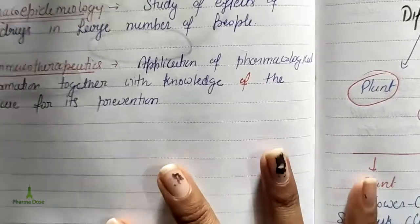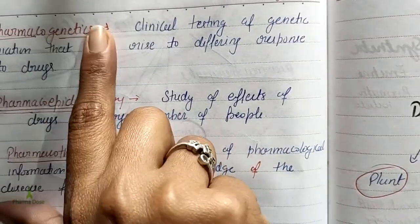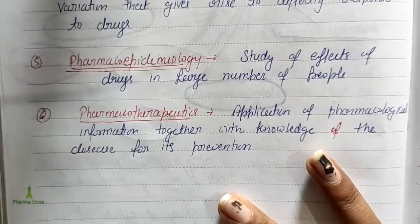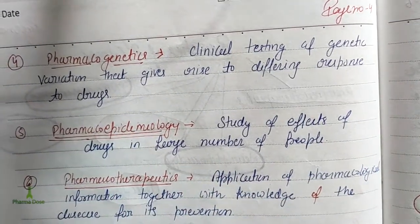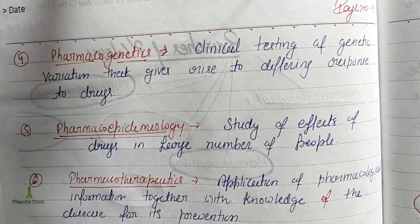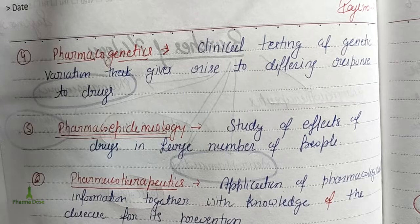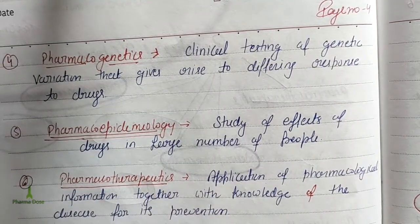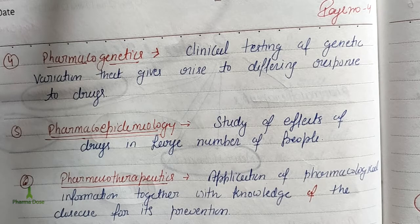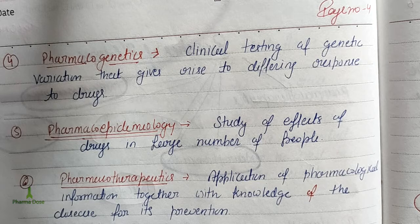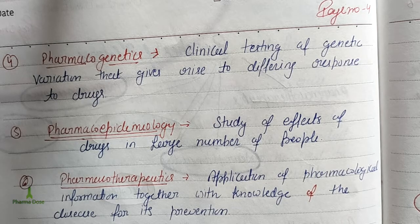Next is Pharmacogenetics. Genetics means study at the genetic level. It involves clinical testing of genetic variations that give rise to different responses to drugs. Different patients can have different drug responses — for example, one patient may respond to 500 mg of a drug while another responds to 200 mg. This means that genetic makeup causes variation in drug effect and response.